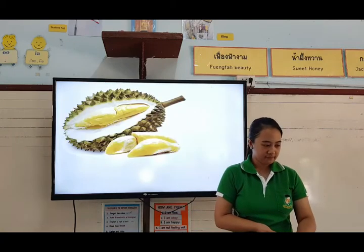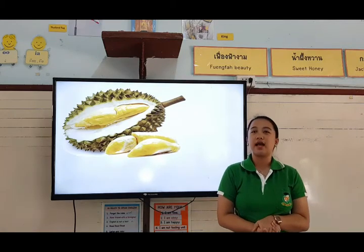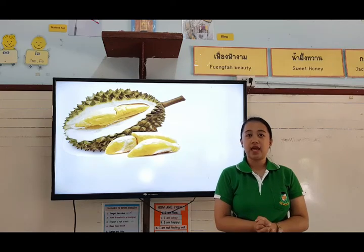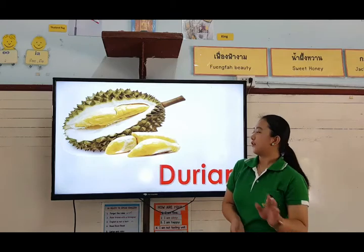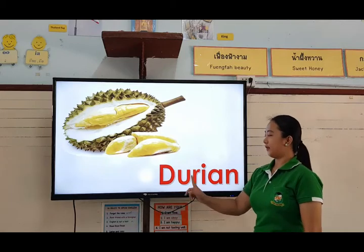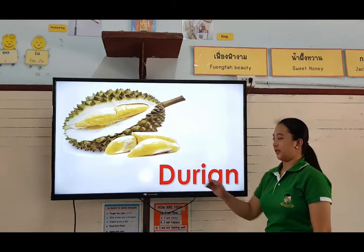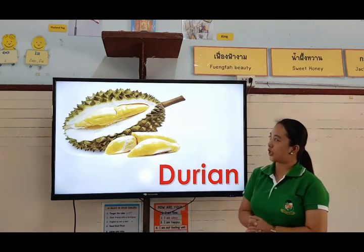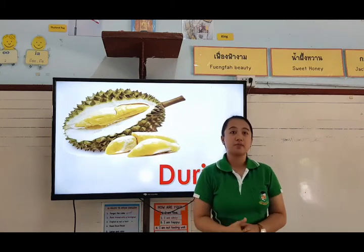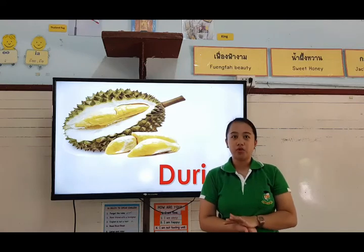Okay, the next picture — what fruit is this? This is very familiar here in Talan. What do you think is the name of the fruit? It's a durian. Very good. Let's spell the word durian: D-U-R-I-A-N. Durian. Okay, so durian is color yellow on the inside and it also has some spikes. So, be careful when you are picking durian.